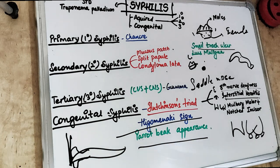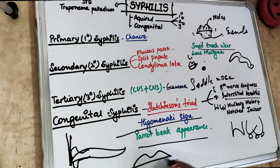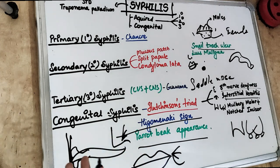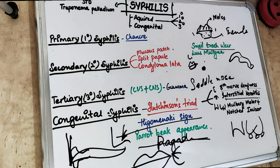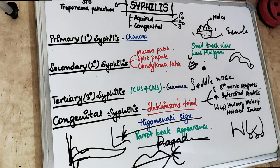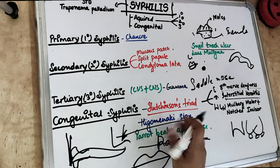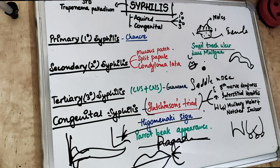In congenital syphilis we also see parrot beak appearance of the patient, and rhagades — cracks or fissures present at the corner of the lips and at the corner of the nose. Secondary features include underdeveloped maxilla, high arched palate, saddle nose, parrot beak appearance, short maxilla with hypoplasia of the maxilla, frontal bossing, and saber skin. These are all the features seen in congenital syphilis.